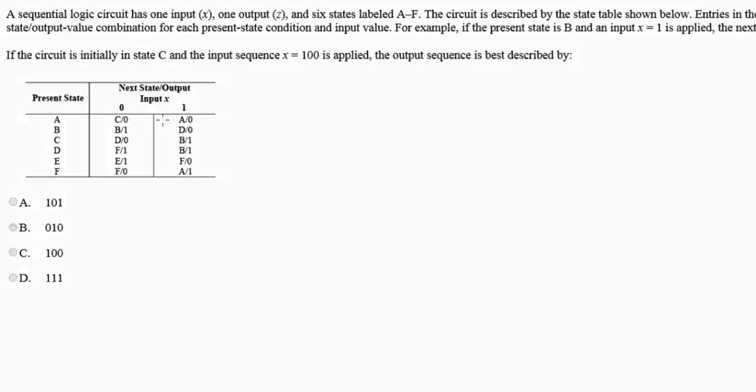So for example, I'll give you an example. If the present state is B and an input X equals one is applied, so you have D slash zero, your next state will be D and the value of Z will be zero.